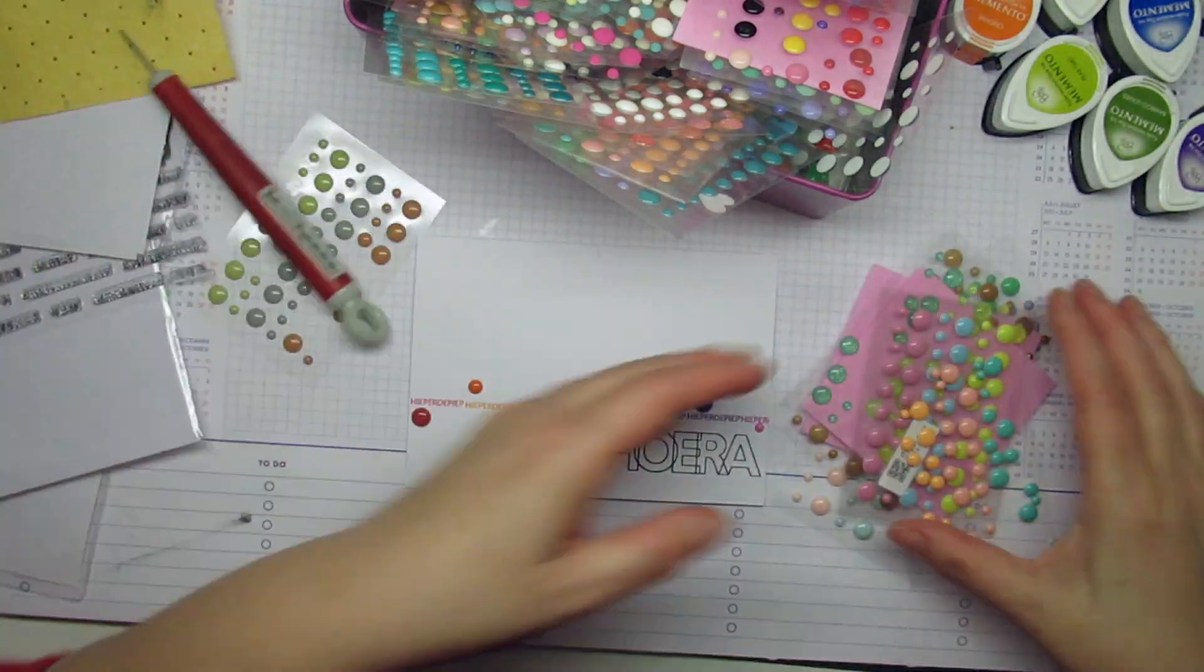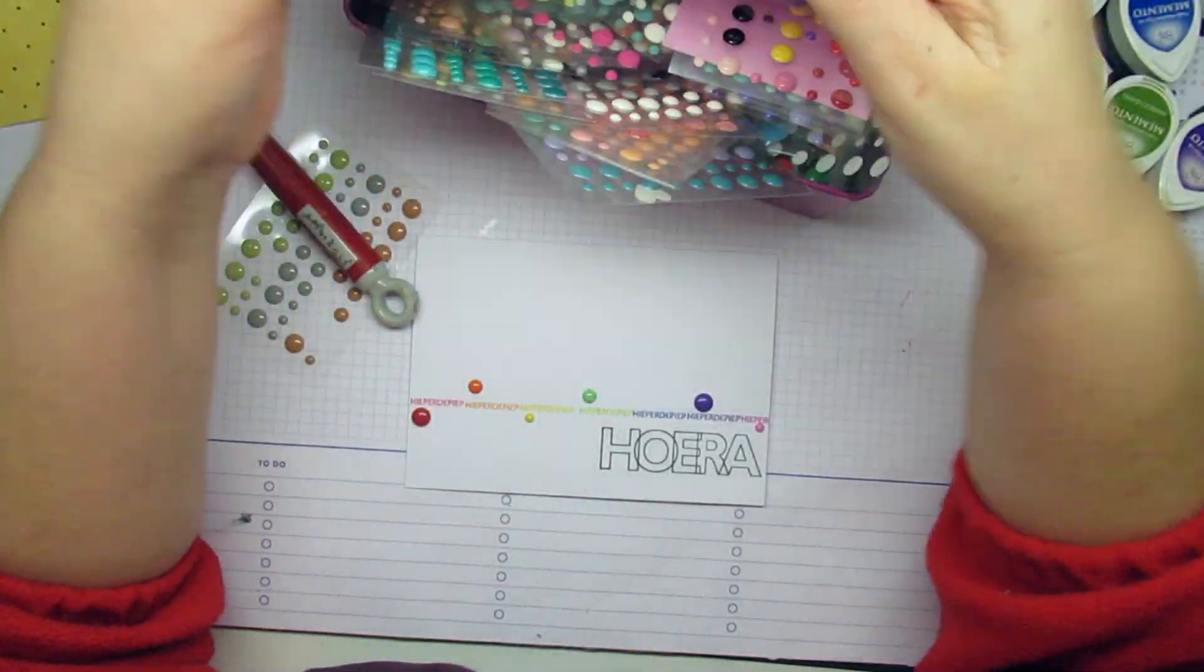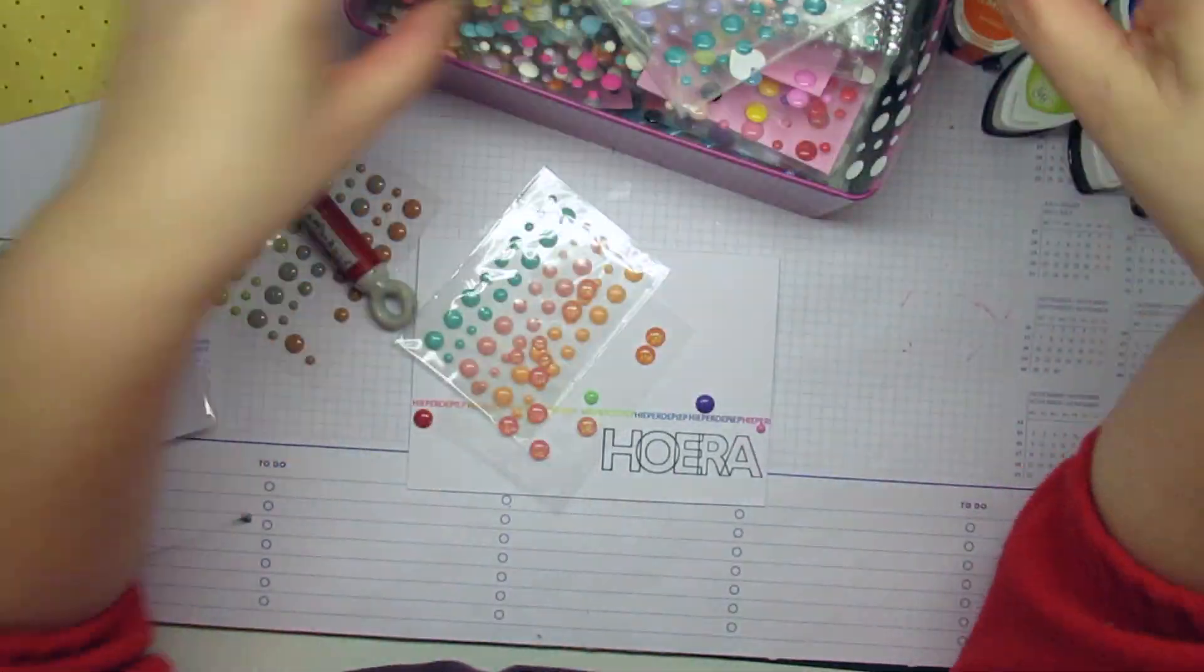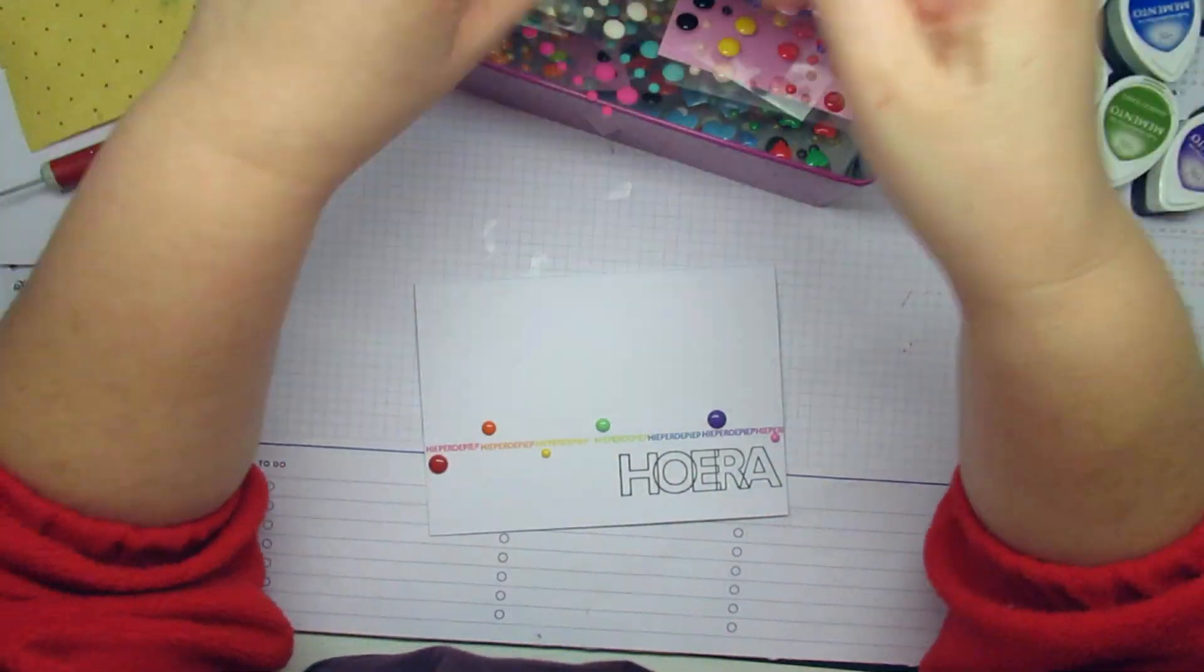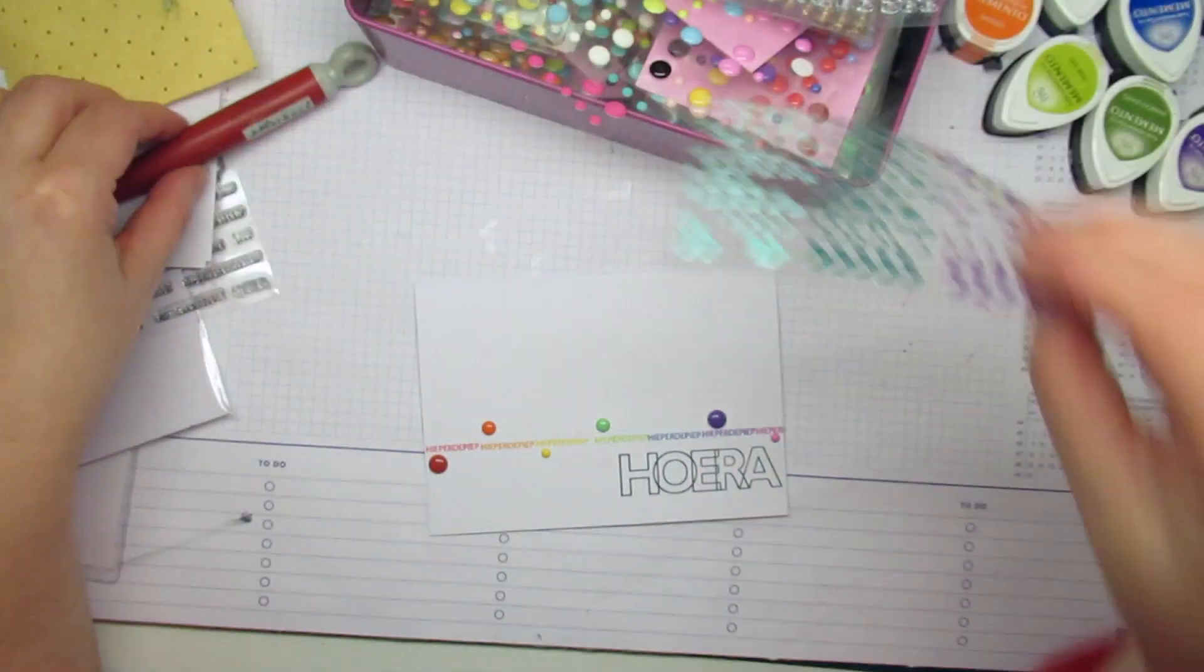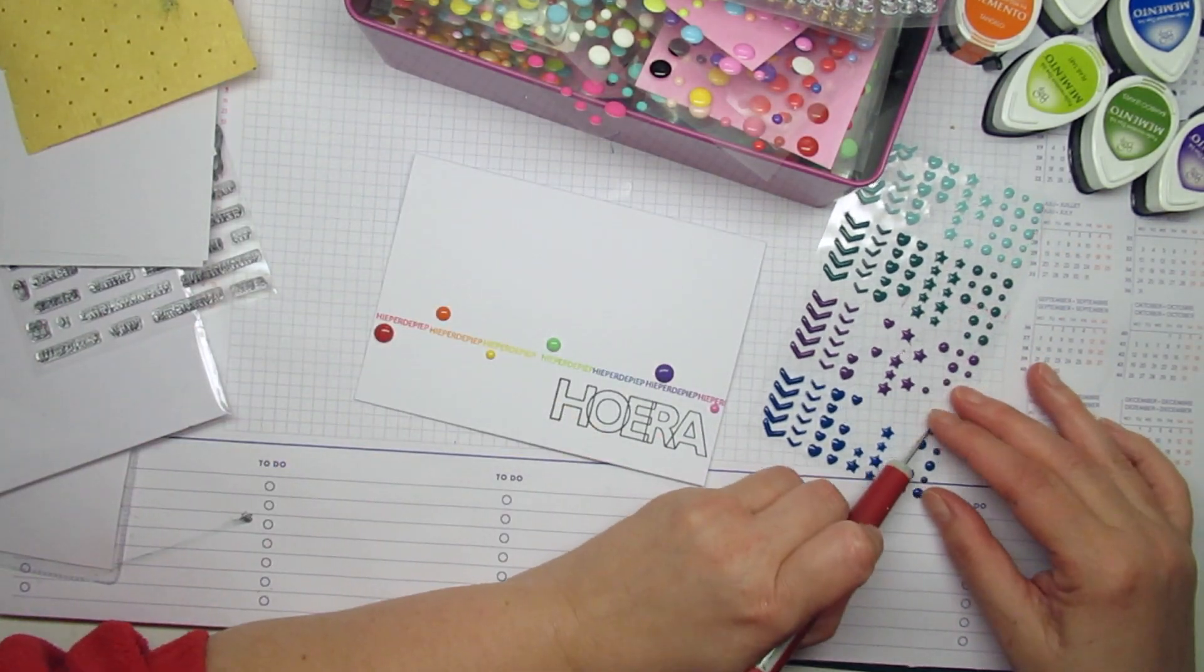I have many enamel dots, I'm just using the plain ones, no glitter no matte ones so I'm trying to find the blue one.